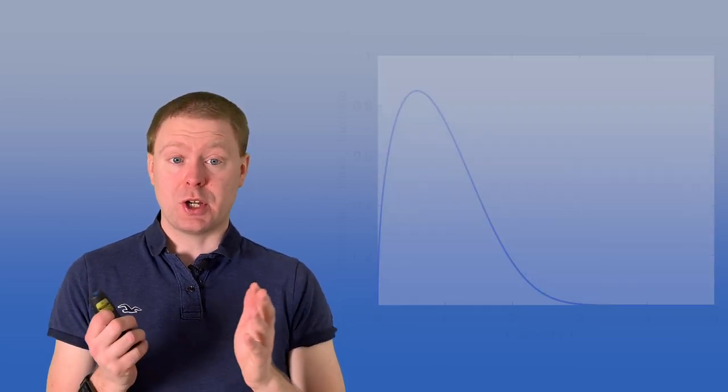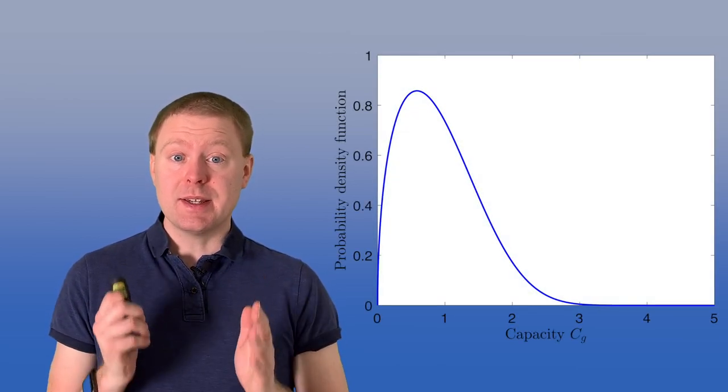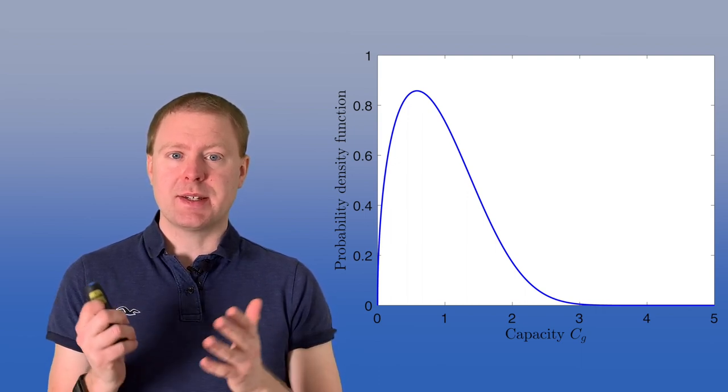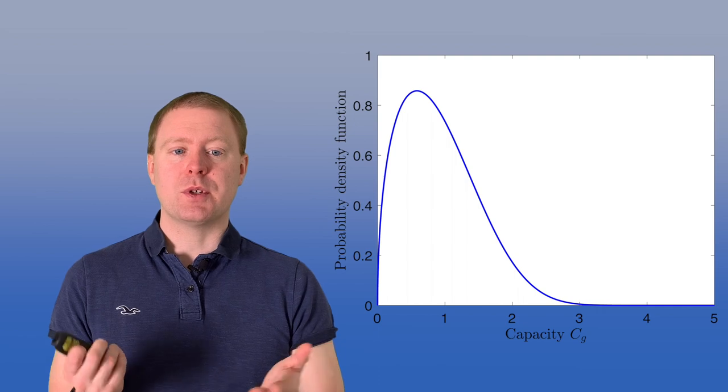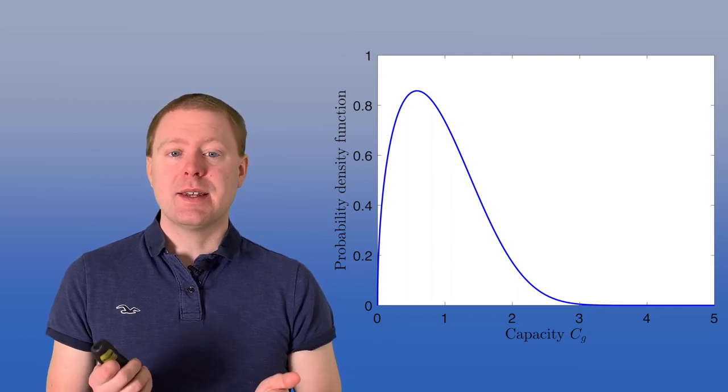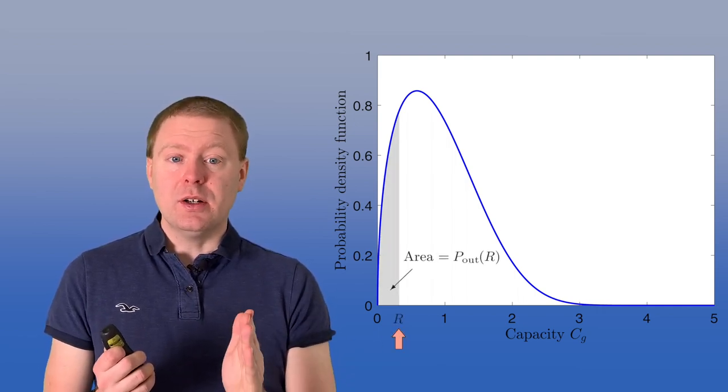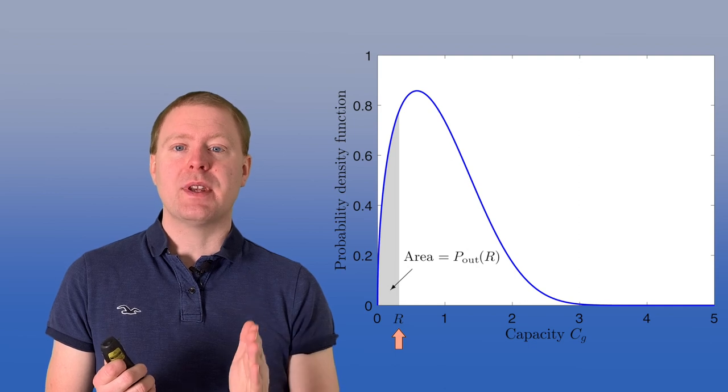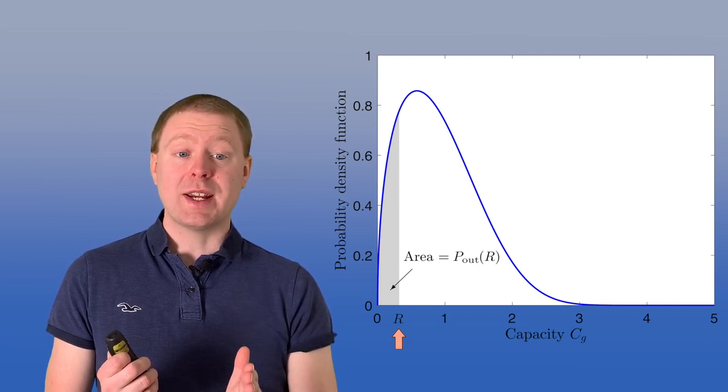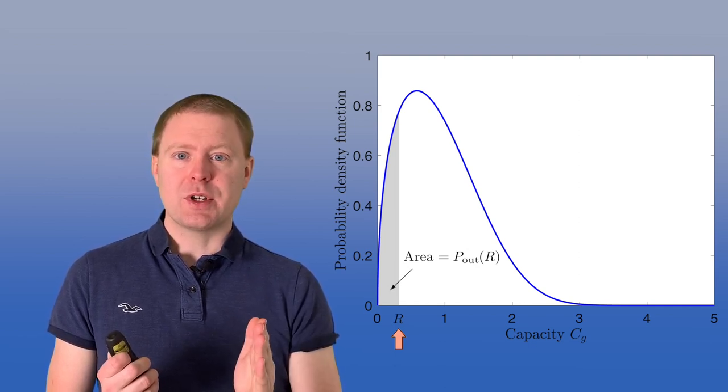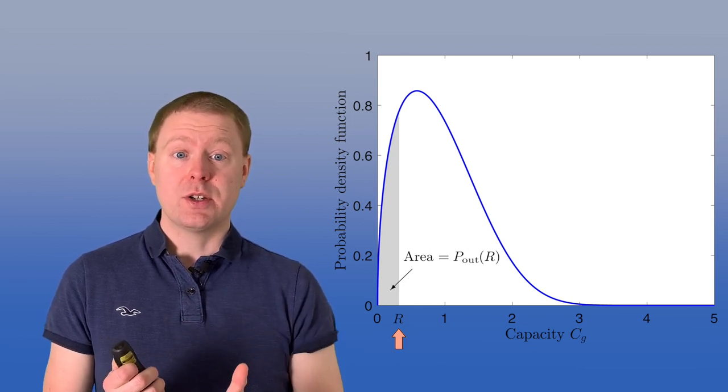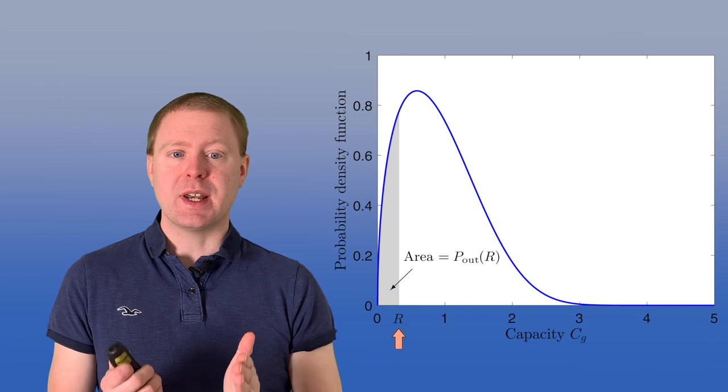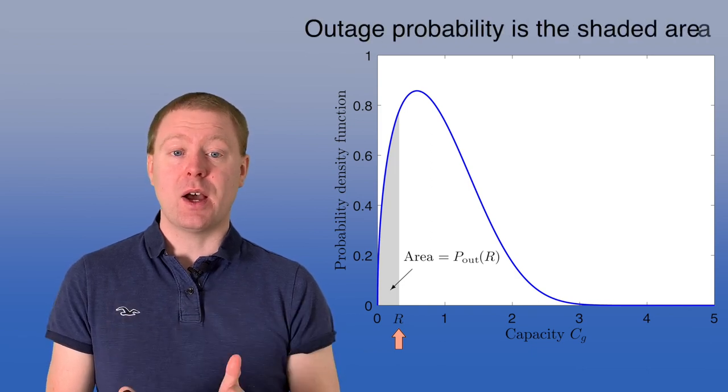We can illustrate the outage probability concept like this. Here's the probability density function of Cg, the capacity for realization g, and we see that it varies between 0 and up to 3, 4, 5. And then we select a rate r, and then we see how often is r greater than Cg. Well, then we should have the area under the curve for values between 0 and r. So that is what's illustrated by the shaded region here. That area is the outage probability.